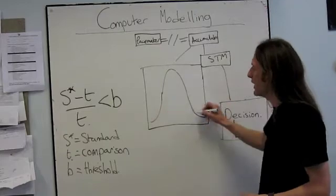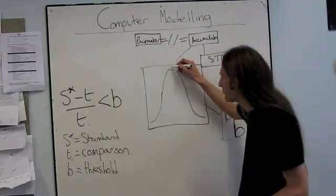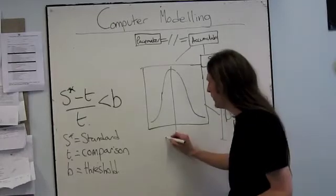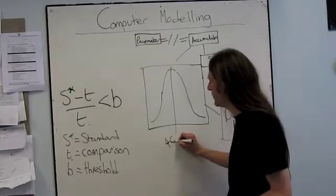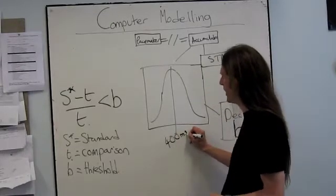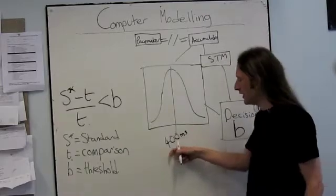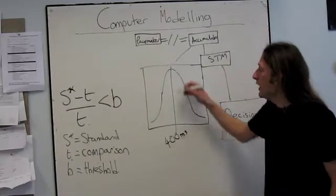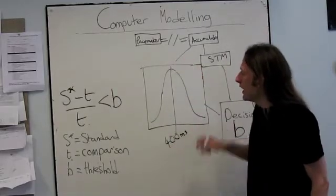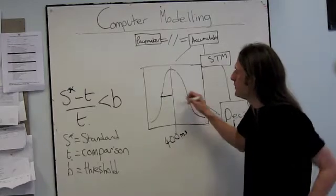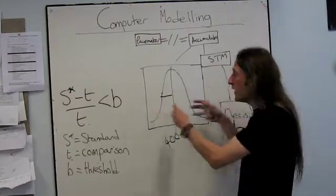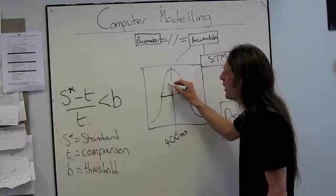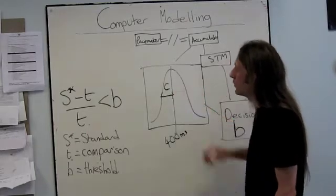You have a distribution of values, a normal distribution, and the mean of this distribution will be whatever the standard value is. So let's just imagine that in the experiment the standard we gave was 400 milliseconds. And the width of this distribution, the variability of this distribution, is controlled by a parameter called C.